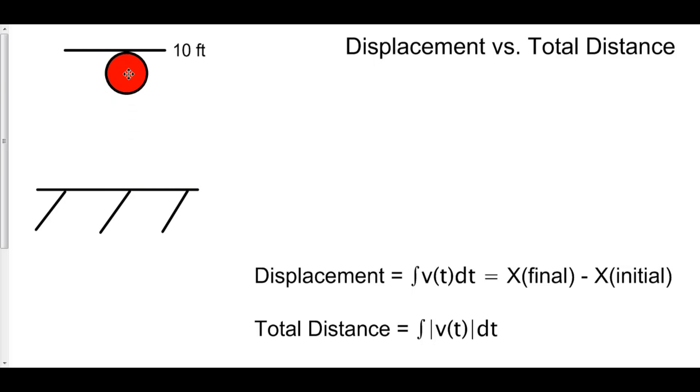Because you have ten going up, negative ten coming down. Really, the displacement is positive ten minus ten, giving us zero.